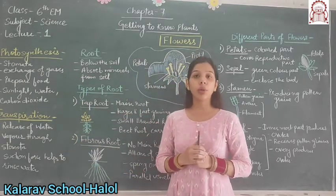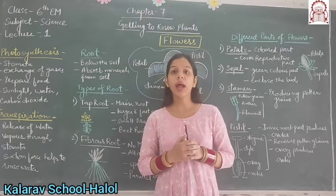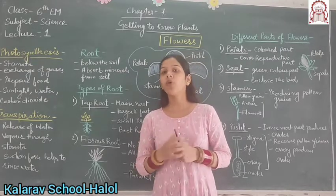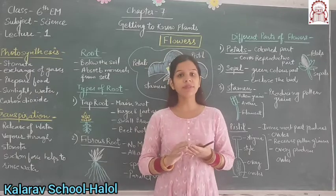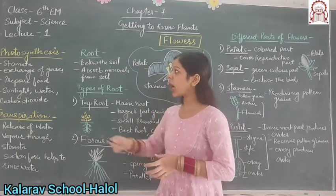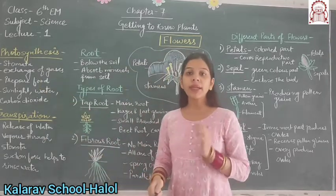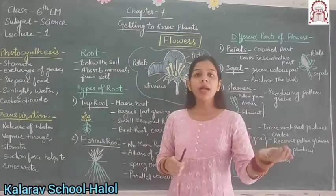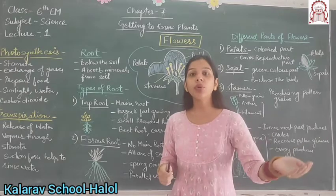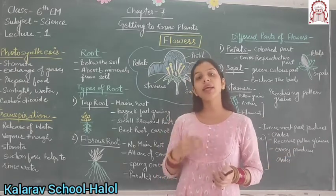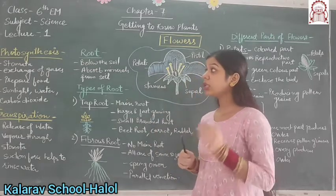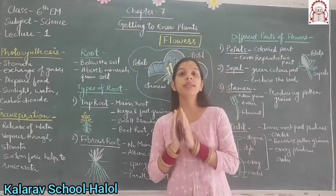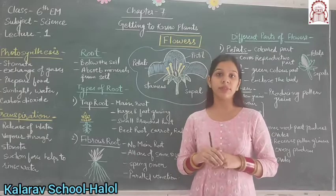Photosynthesis is a phenomenon by which green plants prepare their food with the help of sunlight, carbon dioxide, and water. The surface of leaves contains small pores called stomata. Stomata is helpful in the exchange of gases, which means plants take carbon dioxide from the environment and give out oxygen to the environment. In this way, the exchange of gases takes place. So photosynthesis is the process in which the preparation of food takes place on the surface of leaves.